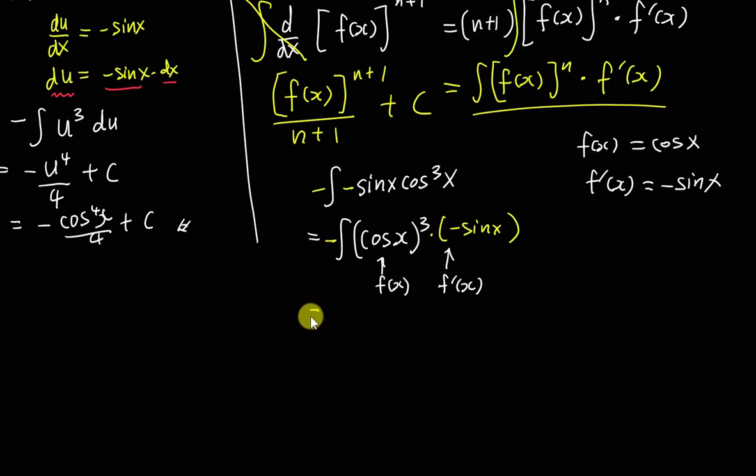So I just copy the f(x), my f(x) is cos x, and then n+1. My n right now is 3, so 3+1 will be 4, divided by 4, plus C. This is how you get the answer: cos⁴ x over 4 plus C.